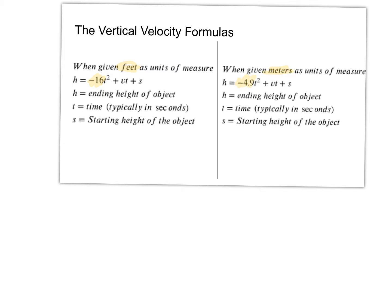Let's quickly review our variables. H stands for the ending height of the object — where the object ends up. T stands for time, typically in seconds. V is your vertical velocity — how the object is moving against gravity. And S is your starting height of the object.